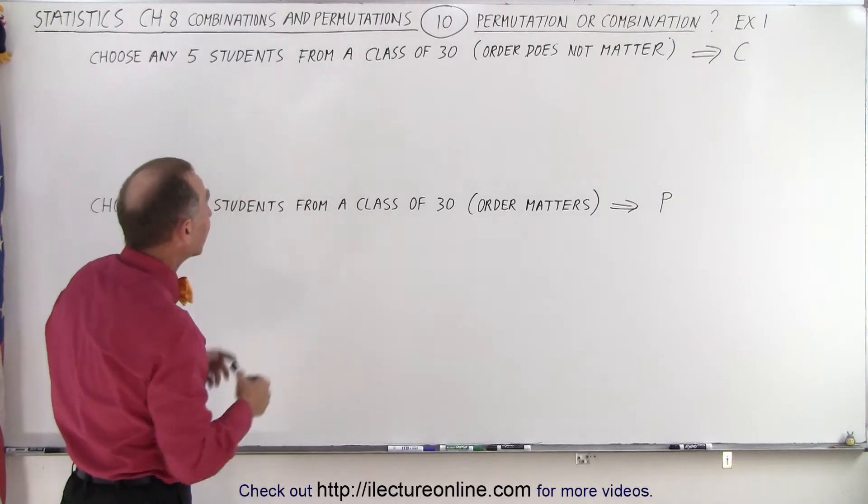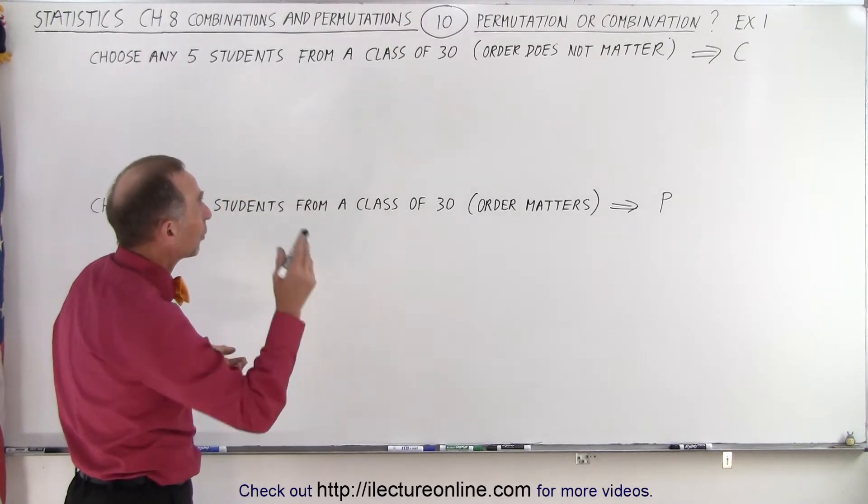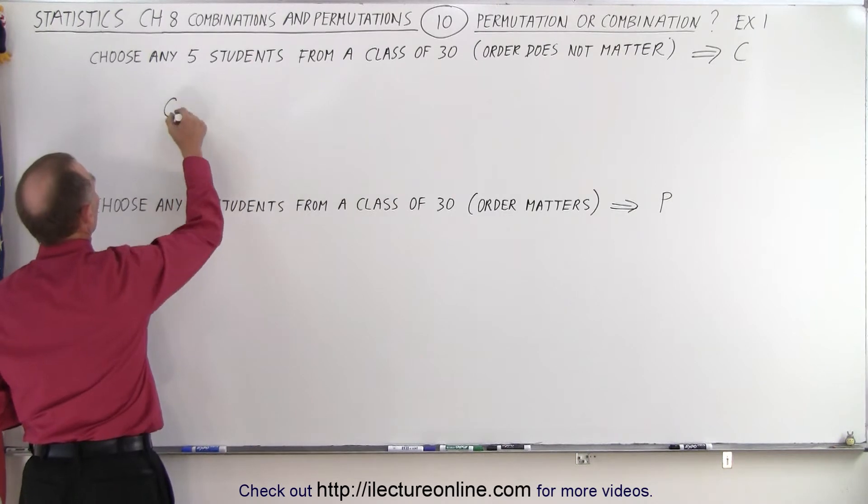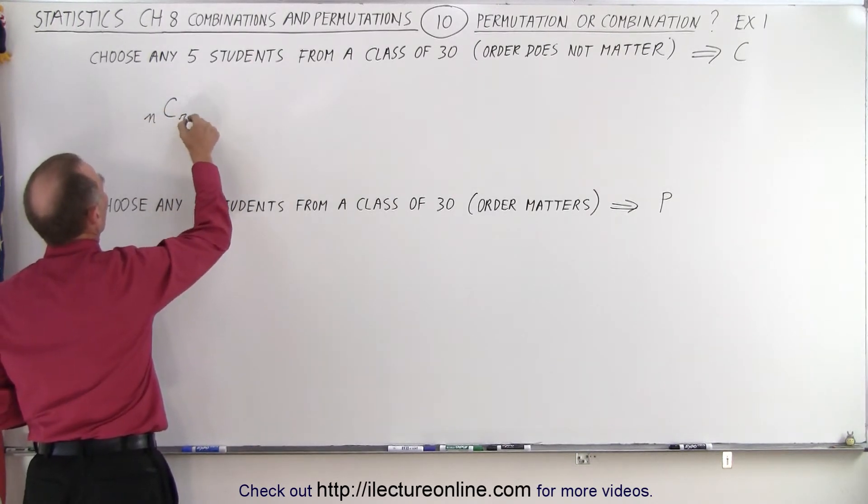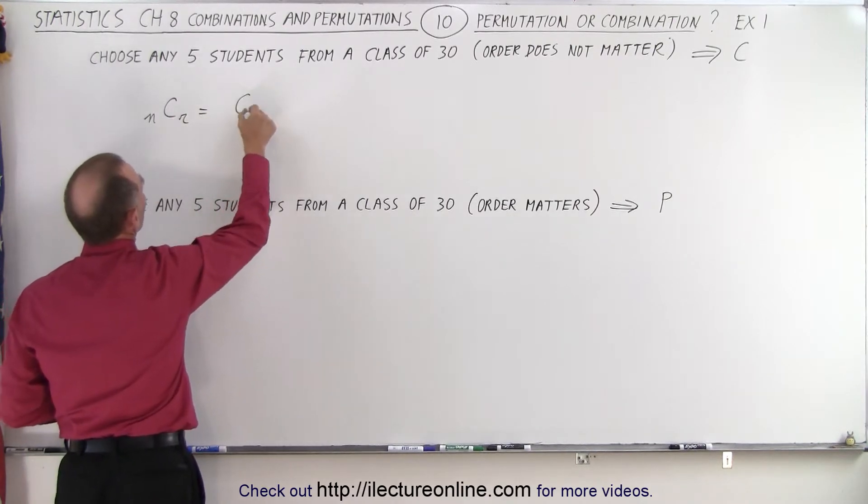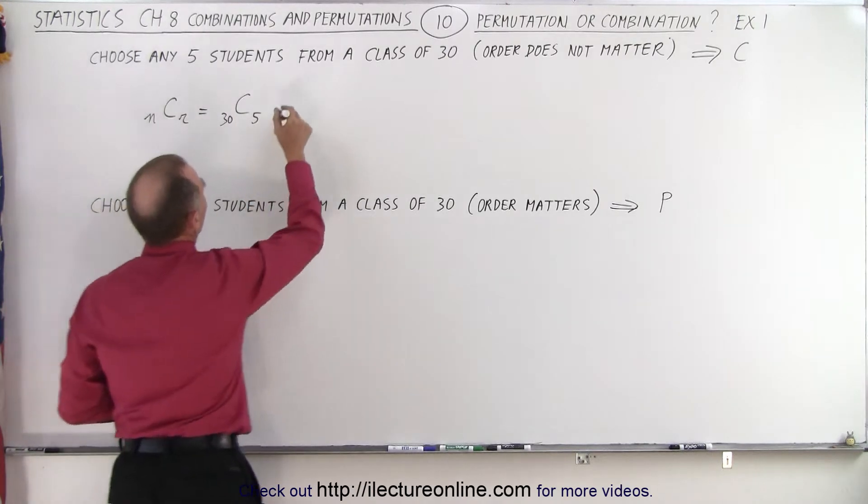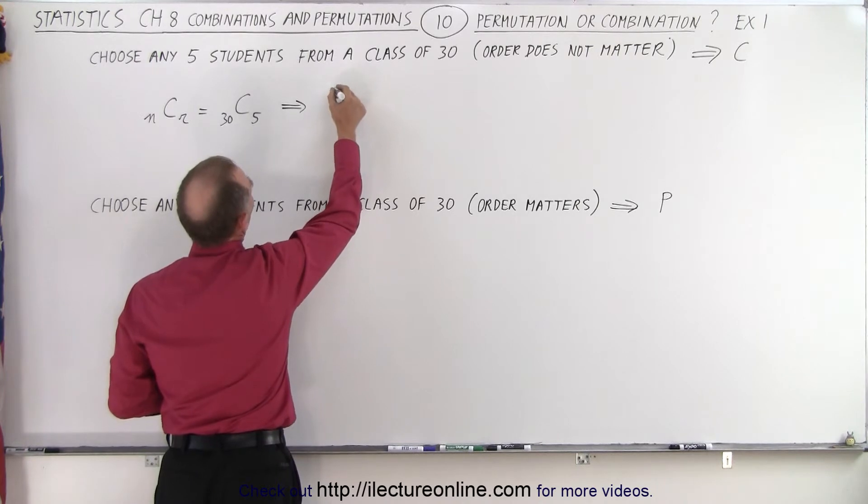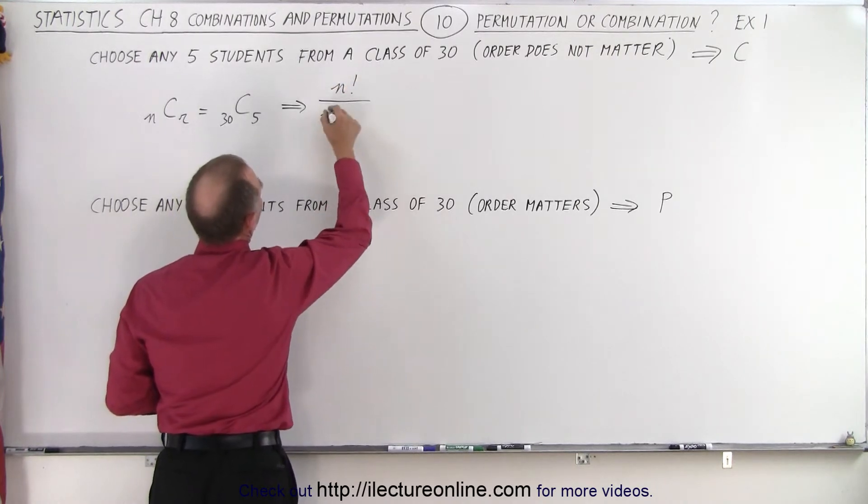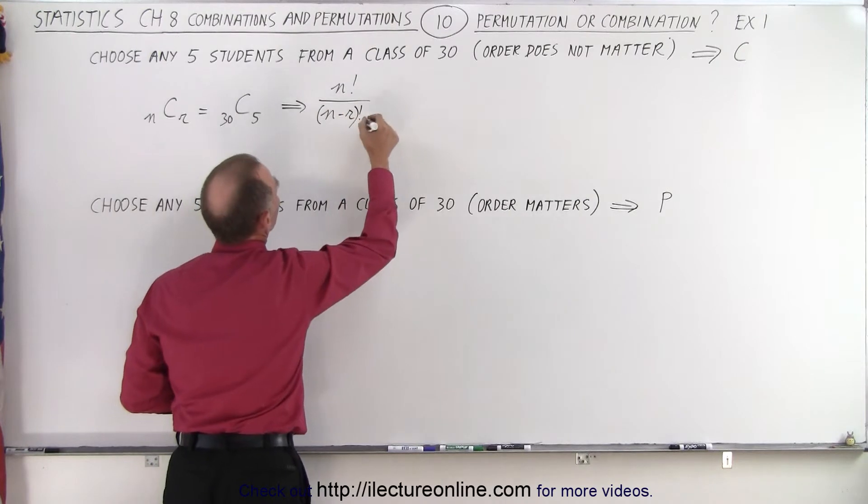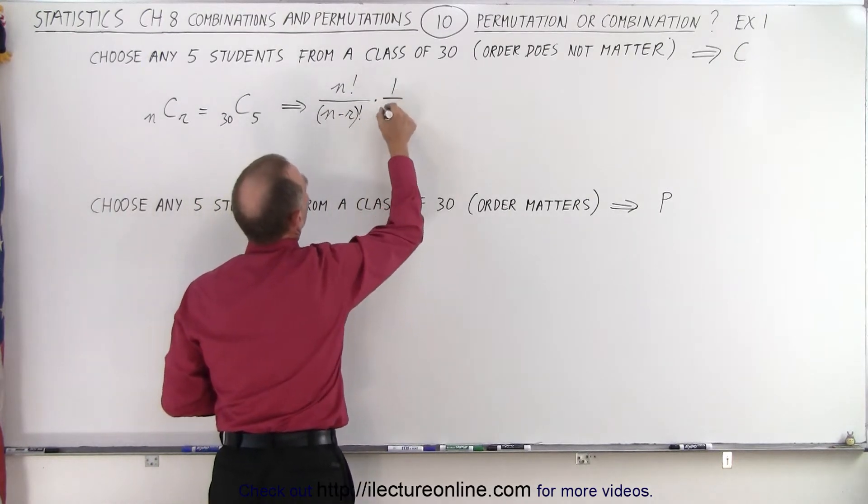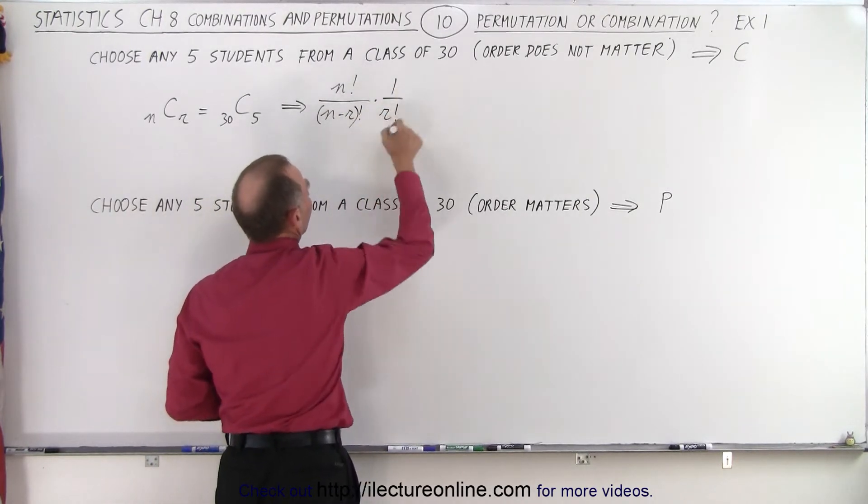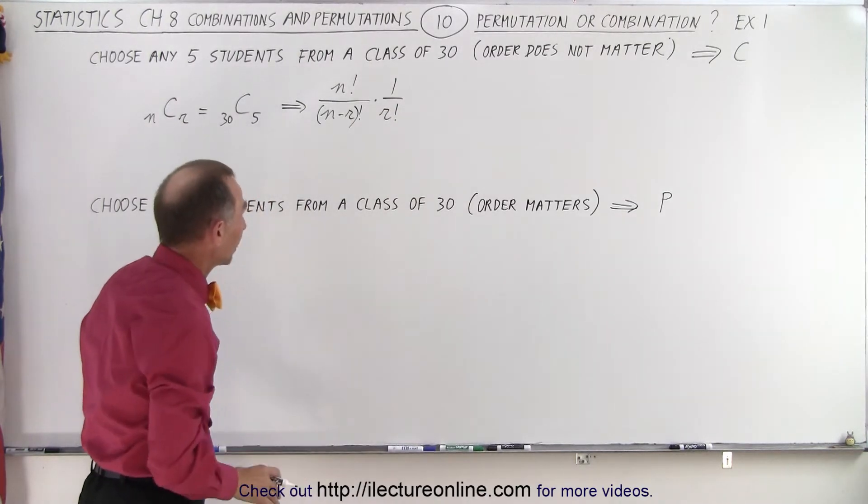So let's calculate either one. If order doesn't matter, we're looking for the number of combinations. So the equation for combinations, if there's N to choose from and R are picked. So in this case, that's going to be the number of combinations. There's 30 students and five are picked. And so the equation we use for that is, in this case, would be N factorial divided by N minus R factorial times one over R factorial.